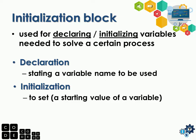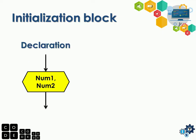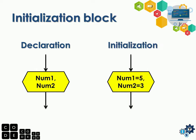To further explain, here is an example of declaration. If you observe, we only have num1 and num2 — they have no value. You're just saying you'll need them later in the process of the algorithm. Then for initialization, there is already a value: num1 is 5 and num2 is 3. That's the difference between the two.